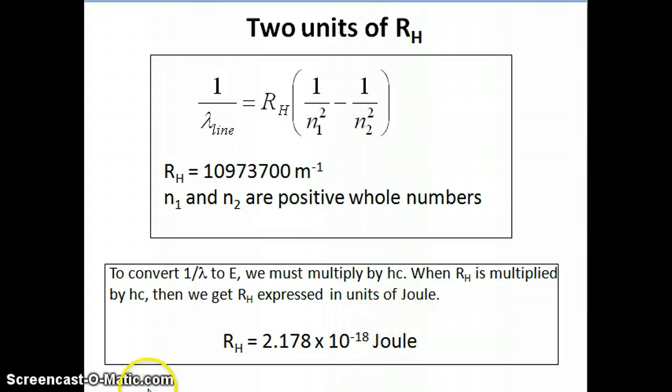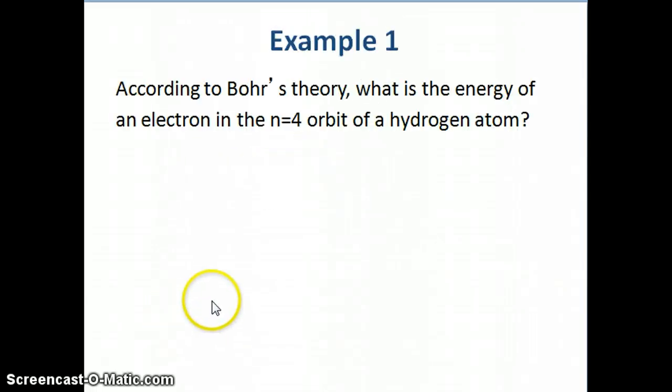I want to emphasize that you use this value when you have the energy form of the equation. So if the left side is energy, then you want to use this as your constant. If the left side is 1 over lambda, then you're going to use this number as your equation. Let's now do a couple of examples to illustrate how to apply Bohr's equation in the context of a calculation.